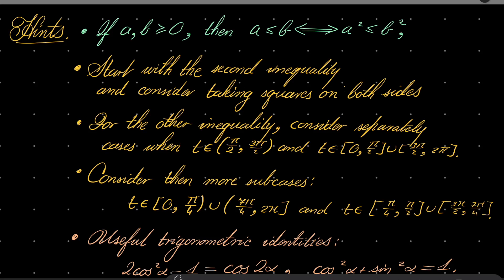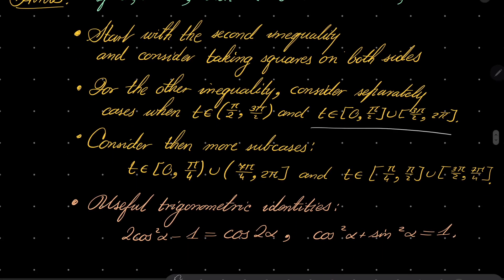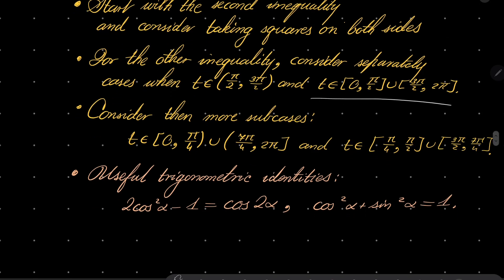For the other inequality, you may wish to consider separately: first, the case when t is between π/2 and 3π/2, and second, when t is between 0 and π/2 or between 3π/2 and 2π, and consider two more subcases. For the second case, consider subcases: t between 0 and π/4, or between 7π/4 and 2π; and second subcase, between π/4 and π/2, or between 3π/2 and 7π/4. These two trigonometric identities may be very useful: 2cos²α − 1 = cos(2α), and cos²α + sin²α = 1.